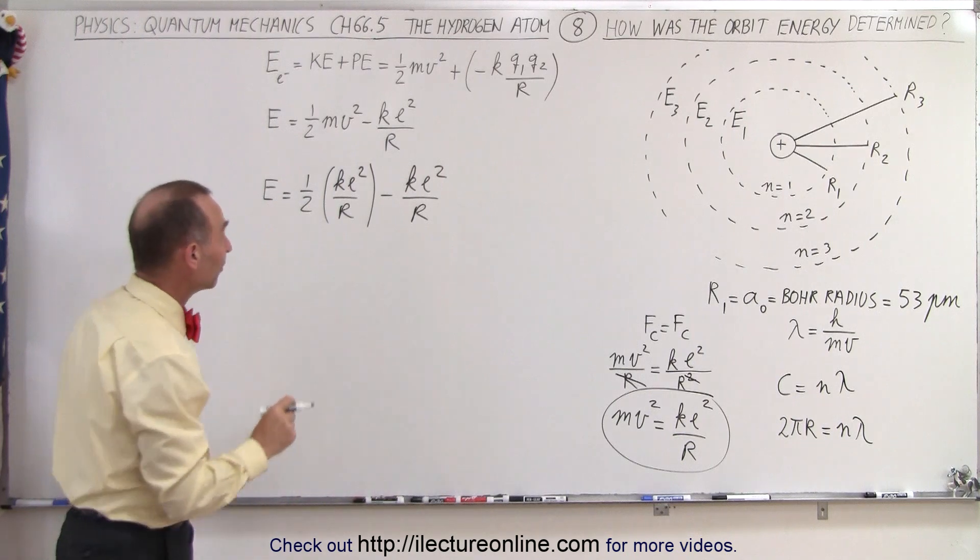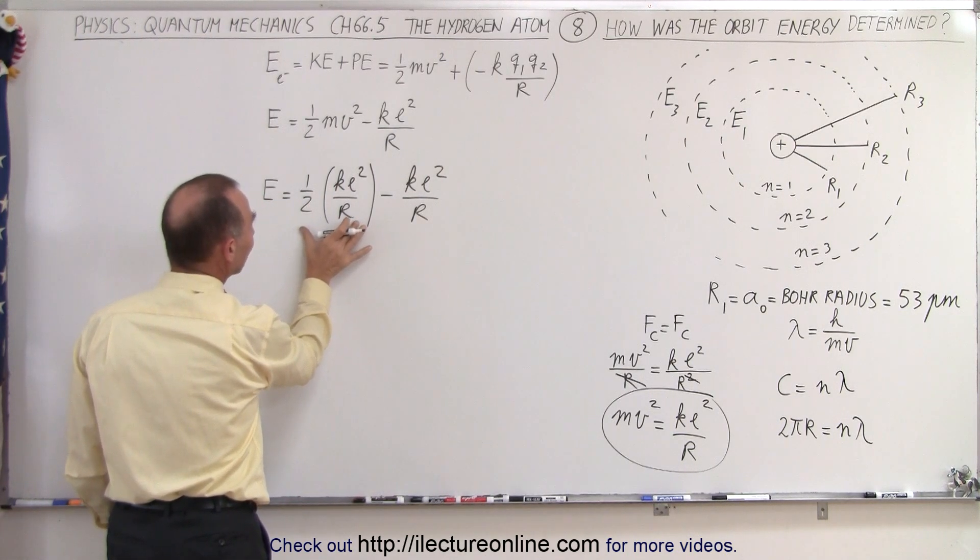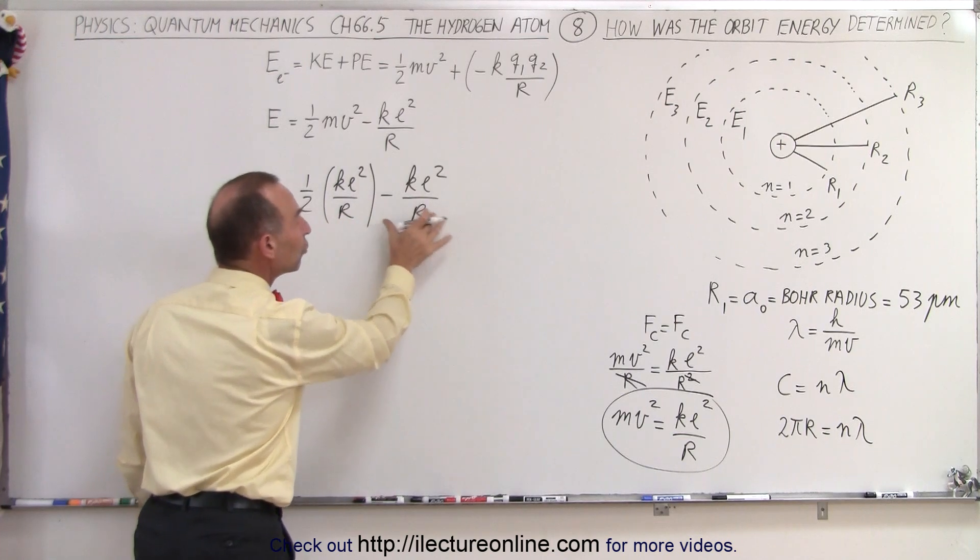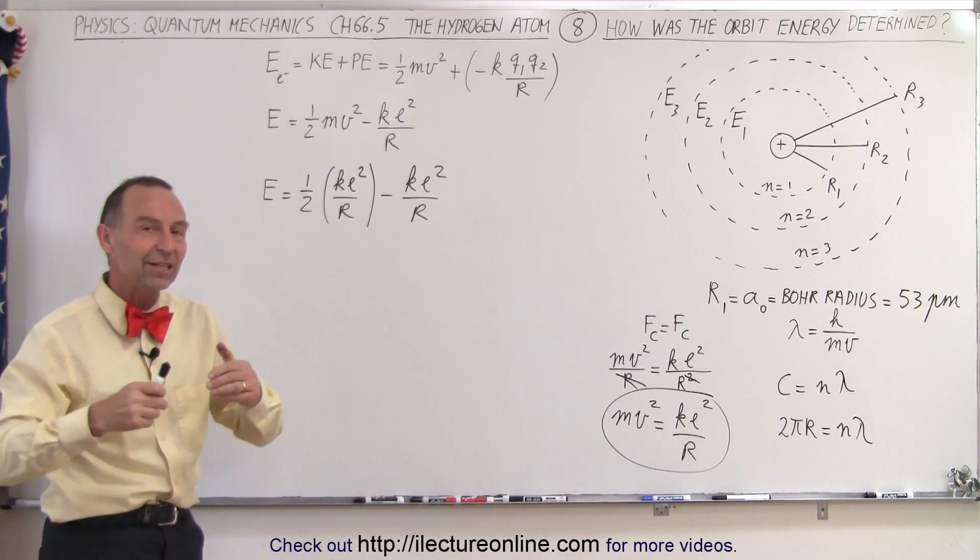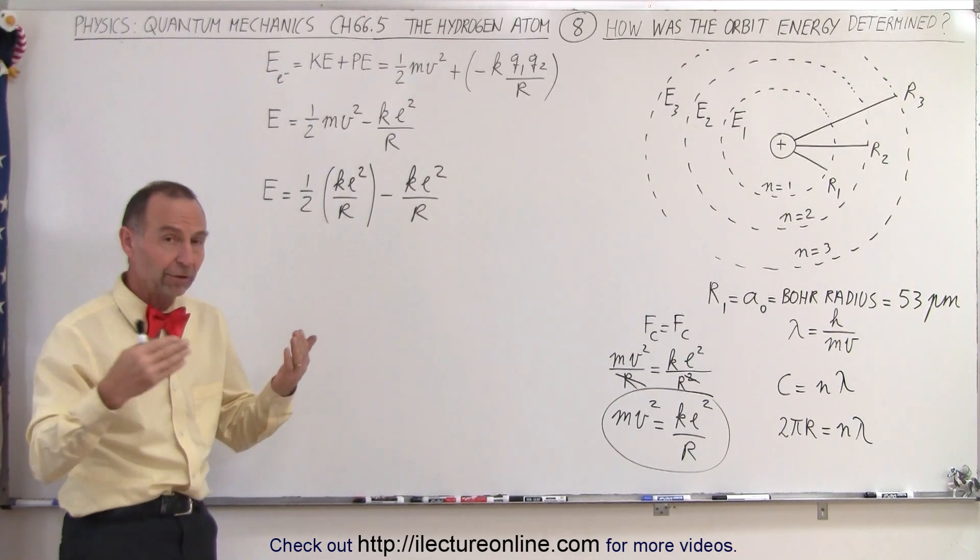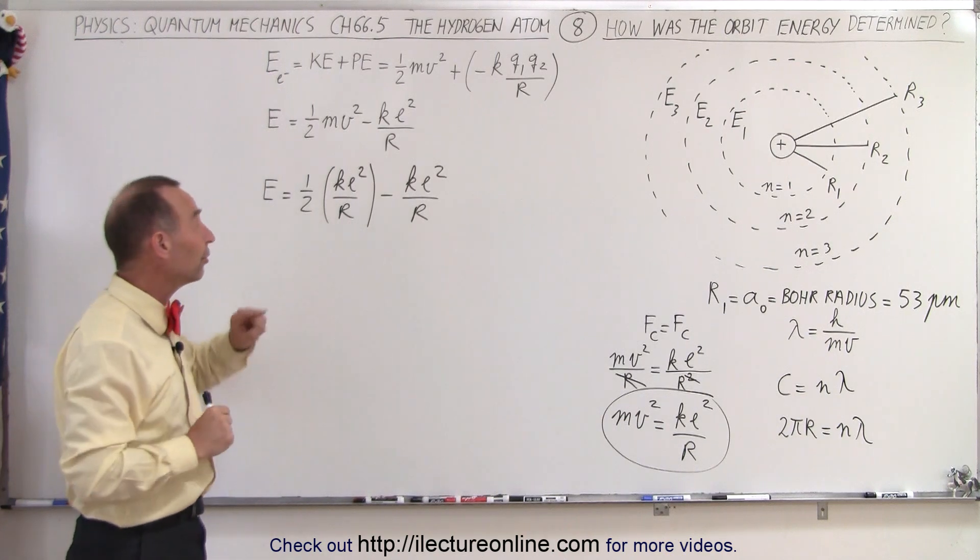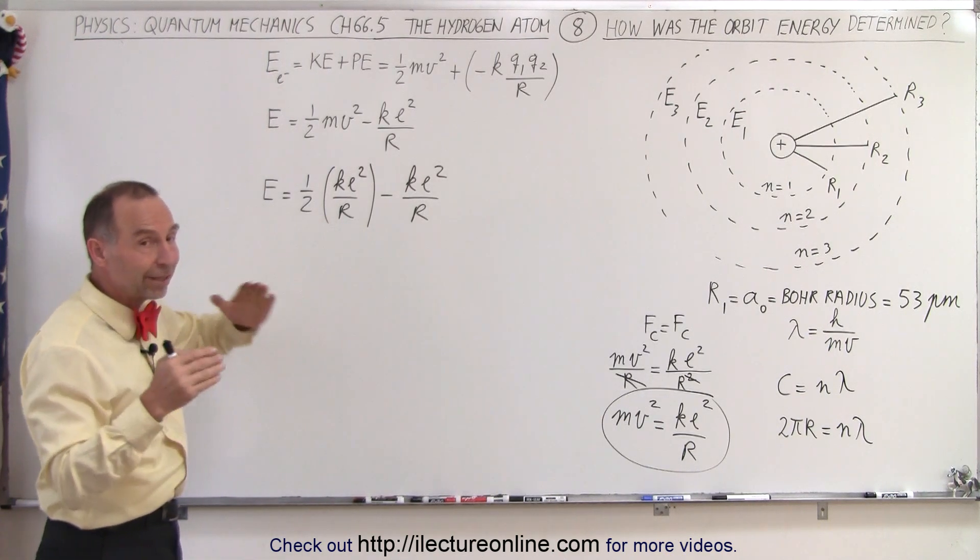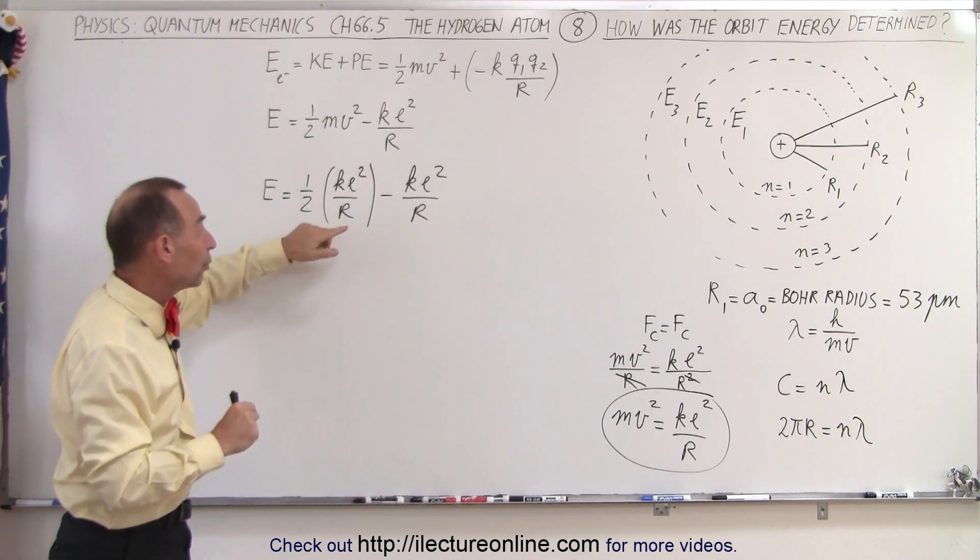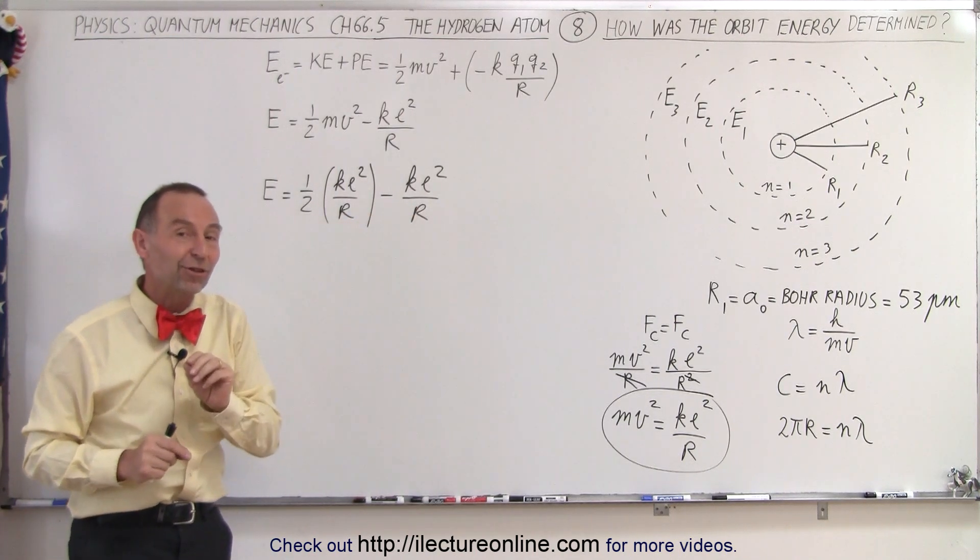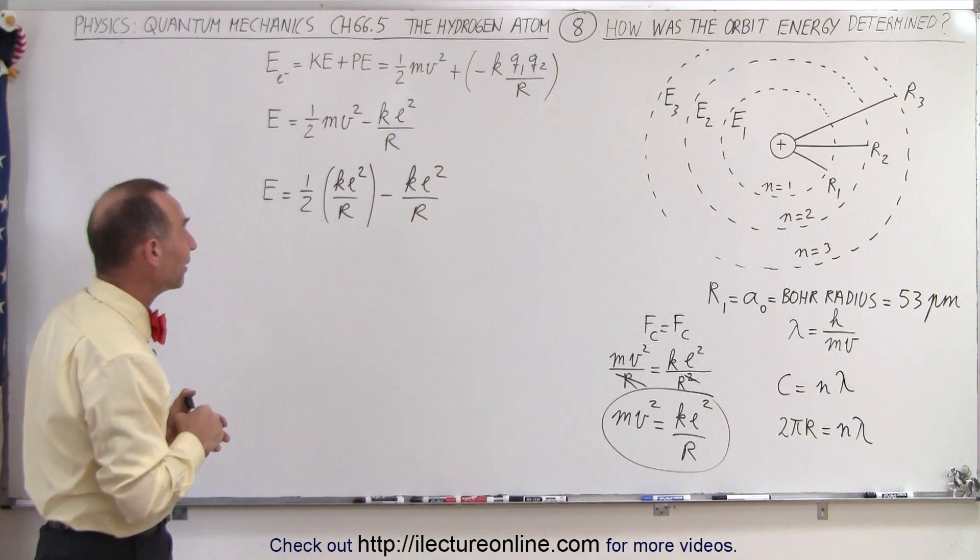So we can see that E is equal to 1/2 times mv² is now going to be replaced by ke² divided by r, and from that we subtract ke² divided by r. Now here's an interesting observation. Notice that the magnitude of the kinetic energy is exactly 1/2 the magnitude of the potential energy. That's actually exactly the same as we see in satellite motion. If you go back and look at the videos on orbital motion of a satellite around the Earth, we realize that the kinetic energy, at least the magnitude of the kinetic energy of the satellite, is exactly equal to half the potential energy of the satellite. So no different for the electron going around the nucleus of an atom.